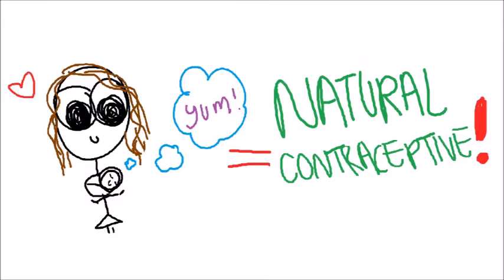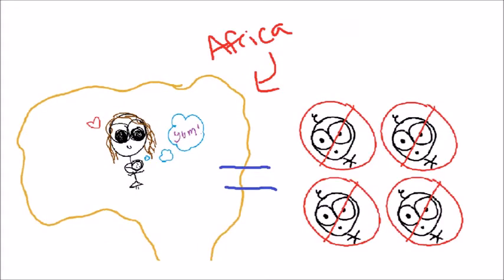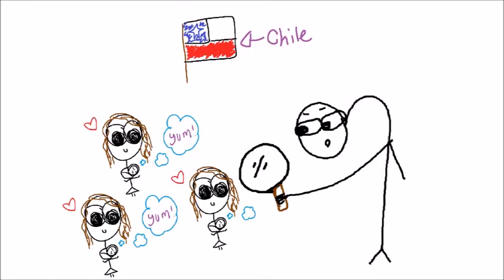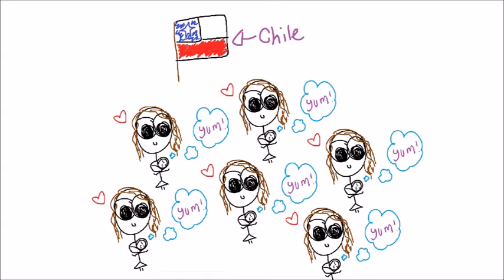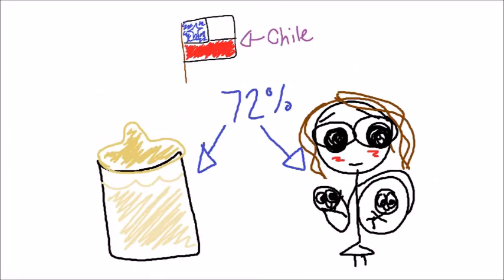In Africa, breastfeeding prevents about four births per woman. In Bangladesh, 6.5 births per woman. And in a study done in Chile, women who breastfed for six months reported no pregnancies, while 72% of the women who bottle-fed got pregnant again.